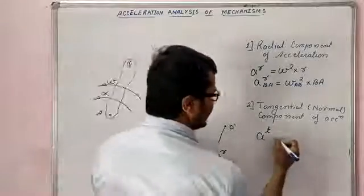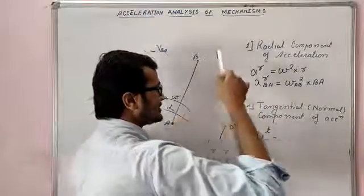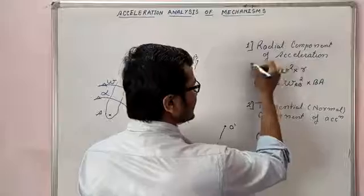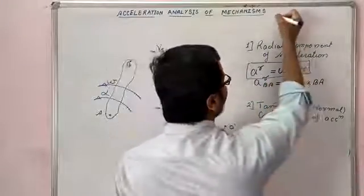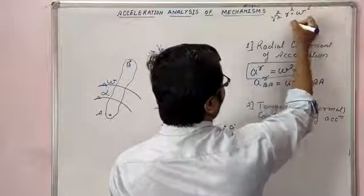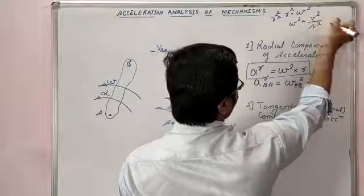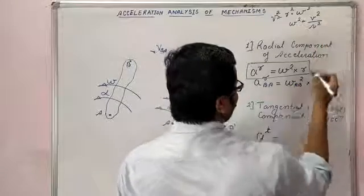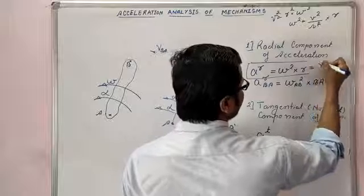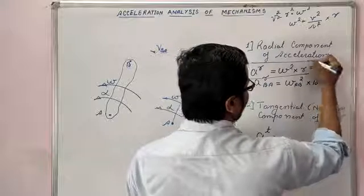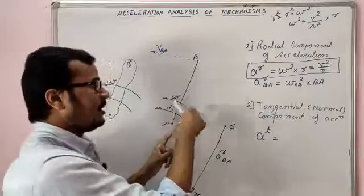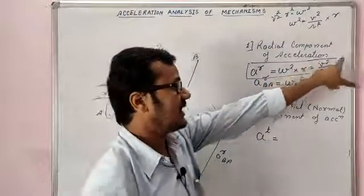Now the radial component acts parallel to the link, directed towards the fixed point, and its magnitude is omega squared into r. We also know that V equals r·omega, so omega squared equals V squared upon r squared. Therefore the radial component of acceleration can also be written as V squared upon r, where V is the linear velocity of B with respect to A and r is the length of the link.